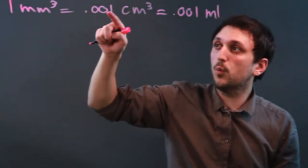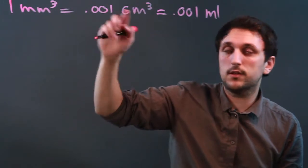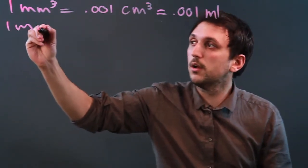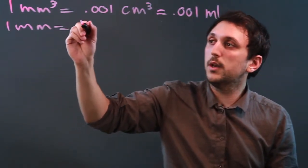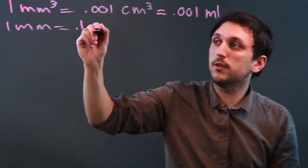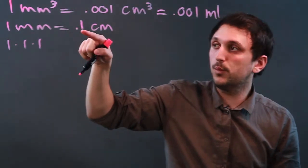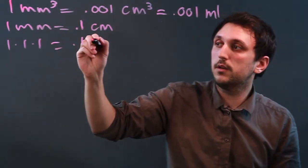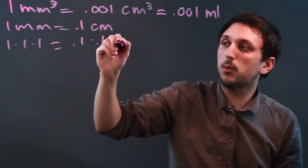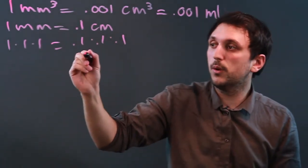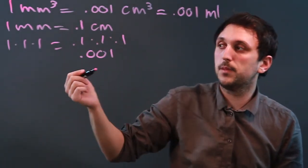Now, the reason that this is .001 is one millimeter equals .1 centimeters. So, when we cube this, we're saying one times one times one, but then we have to say .1 times .1 times .1, which would be .001.